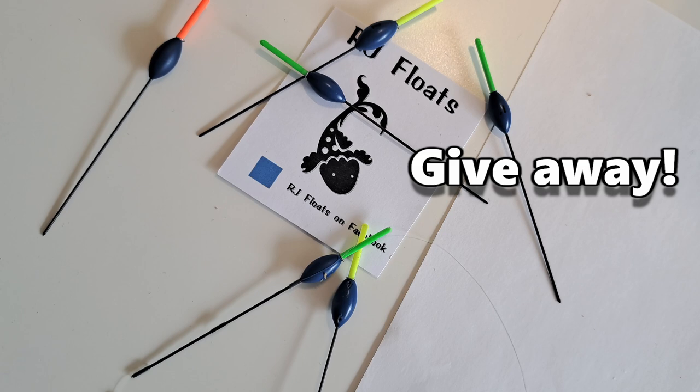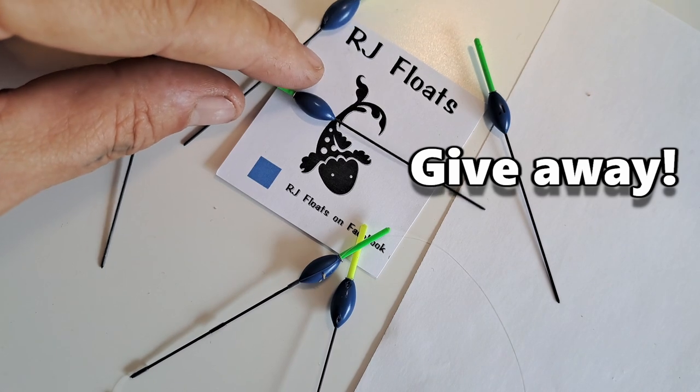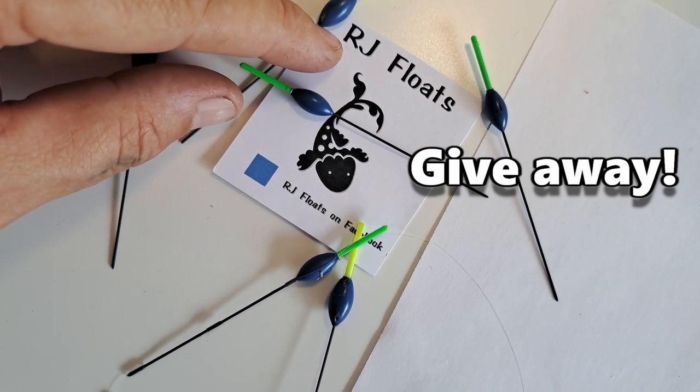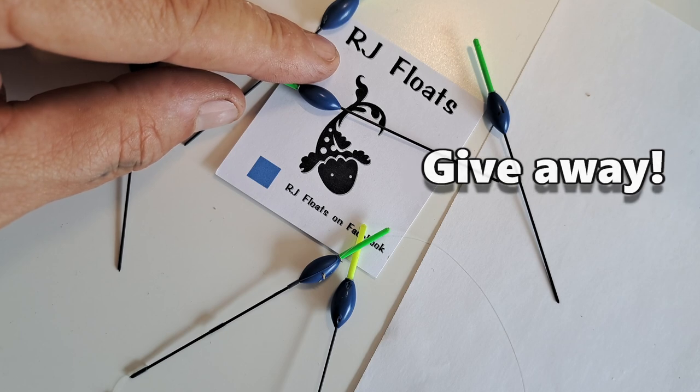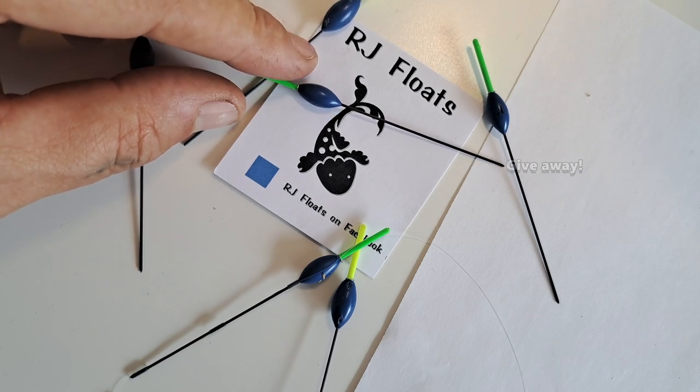Like and subscribe to the video, put in the comment RJ floats. Just type in the comment RJ floats below and then you'll go into a random draw and I'll pick somebody out at random and send them four floats in the post. Thanks for watching guys.